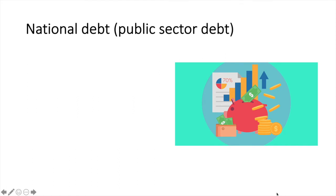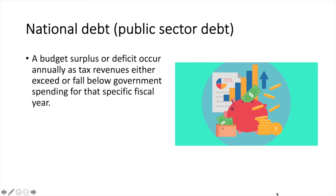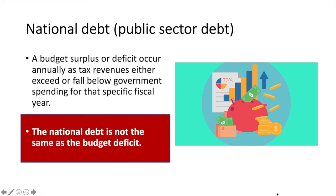A budget surplus or deficit occurs annually as tax revenues either exceed or fall below government spending for that specific year. The national debt is not the same as the budget deficit — it's very important that you remember this and do not confuse the two concepts.